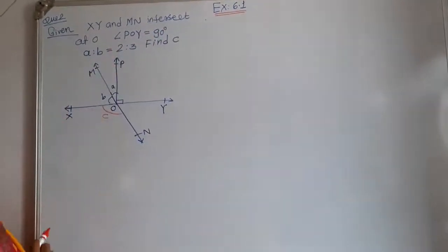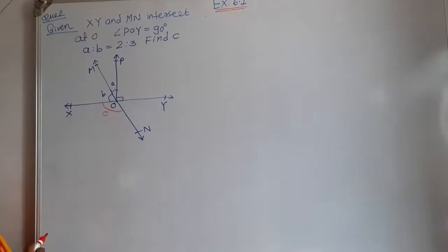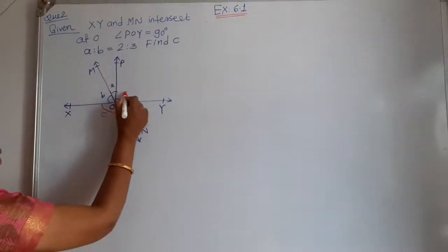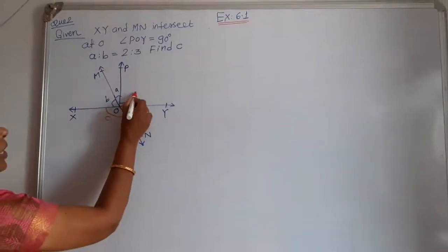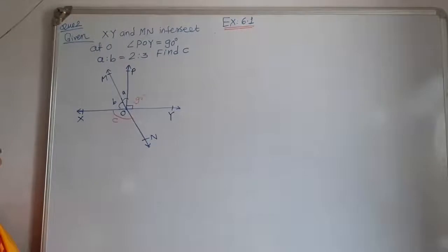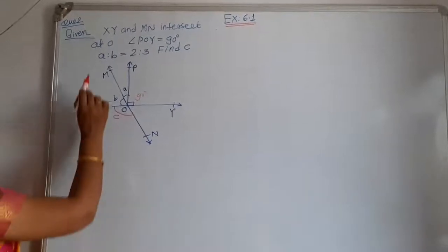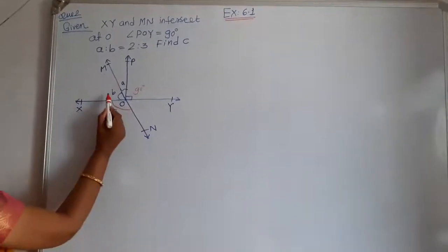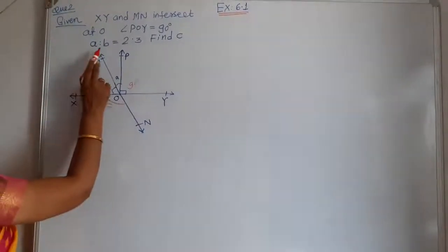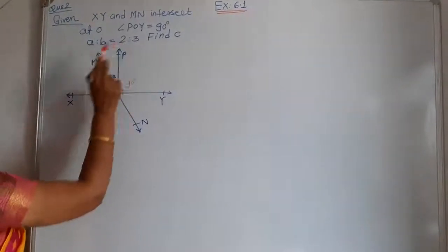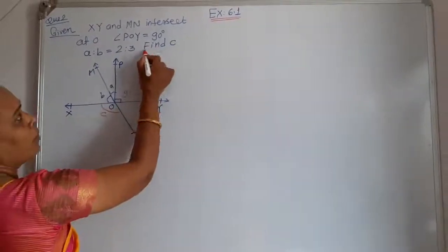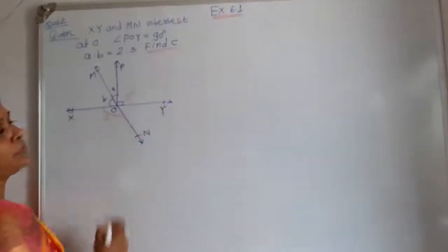Angle POY is given as 90 degrees — this is a perpendicular line and the measure of this angle is 90 degrees. The ratio between angle A and B is given: A to B is 2 to 3, and you have to find out the value of C.